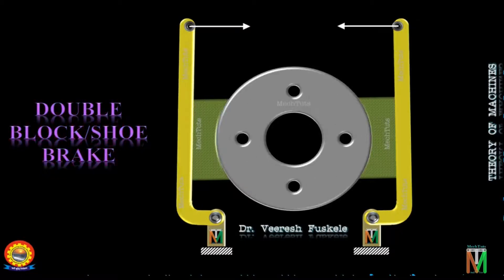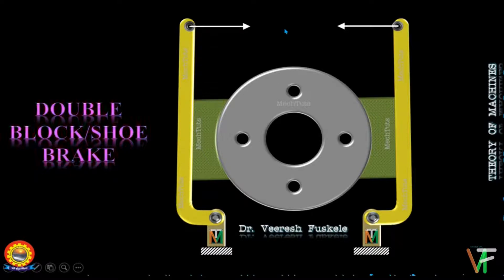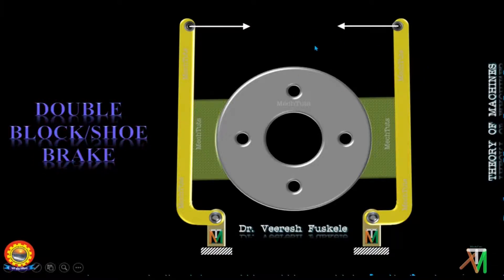This is how the forces are applied from both sides on the drum to make it stop. The braking torque in case of double shoe brake becomes two times, as the torque is applied from both sides.